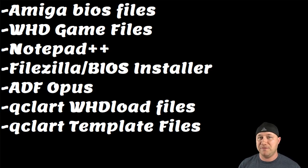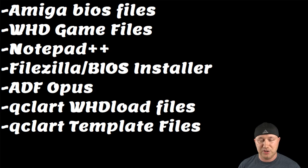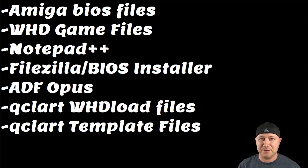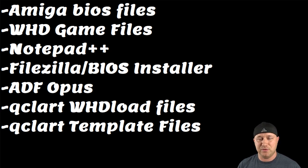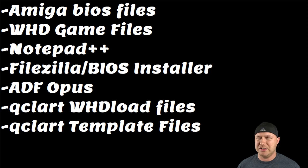A couple of things you're going to need for this: the BIOS files — there are four BIOS files that you'll have to find and download. I'll show you how to search for those; they were easy to find. The games were harder to find than the BIOS files. You're going to need the H-mod associated with Amiga games, Notepad++, FileZilla so you can move the BIOS files to your Super Nintendo — or you can use the BIOS installer — a program called ADF Opus, the WHD games for the Amiga, and the Q Clark files.